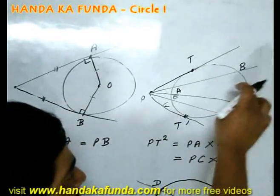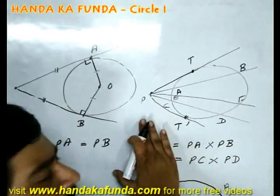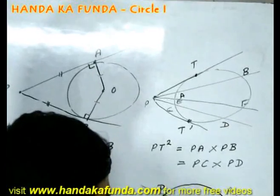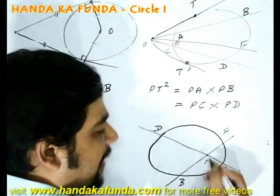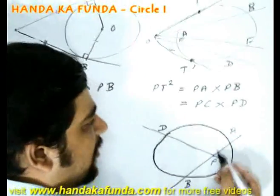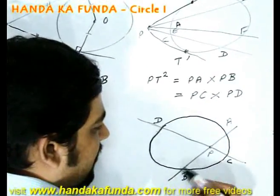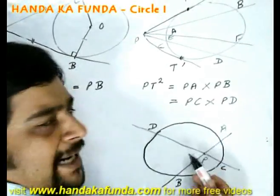Now, if here the secants were intersecting at a point outside the circle, it is possible that the secants A and B and C and D, they intersect at a point inside the circle. Then also the rule PA into PB is equal to PC into PD, that still stands.